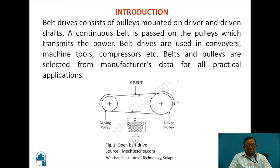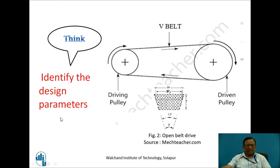As you know, the belt drives consist of pulleys mounted on driver and driven shafts, and a continuous belt is passed on the pulleys which transmits the power. Belt drives are extensively used in industrial applications such as conveyors, machine tools, compressors, etc. Belts and pulleys being standard mechanical elements, they are required to be selected from manufacturer's data for all practical applications. Here we have a driving pulley, a driven pulley, and a continuous V-belt with a trapezoidal cross section, which uses a frictional principle at the edges to transmit power. The edges and the groove in the pulley develop a frictional force which causes the required power transmission.